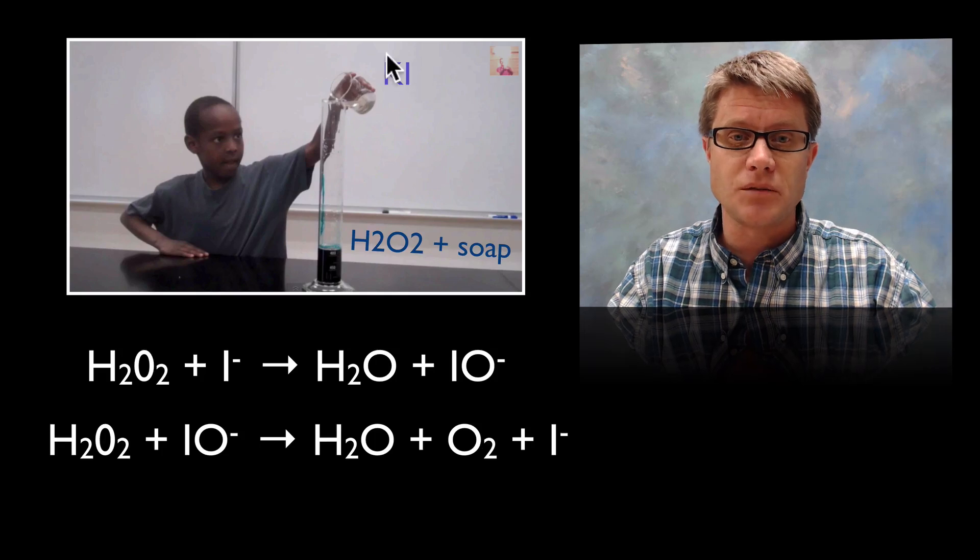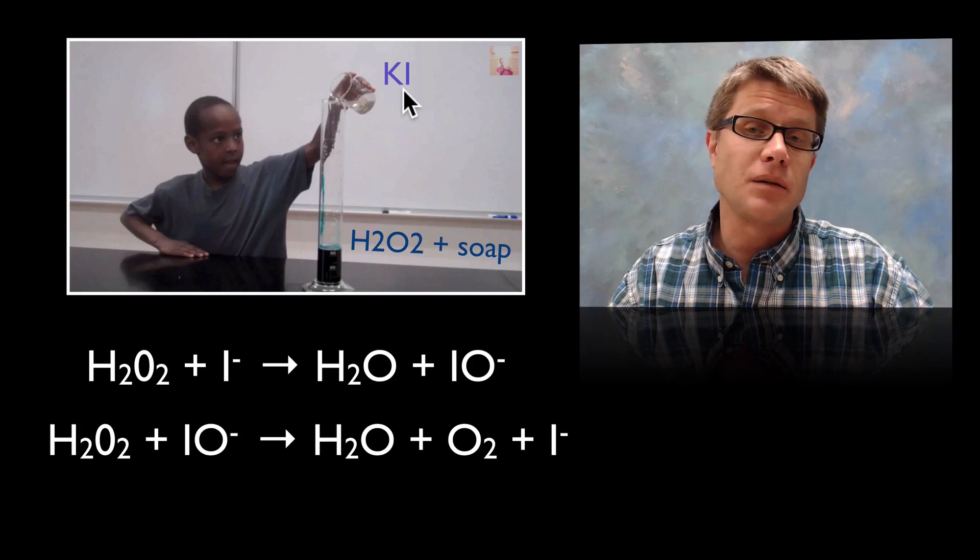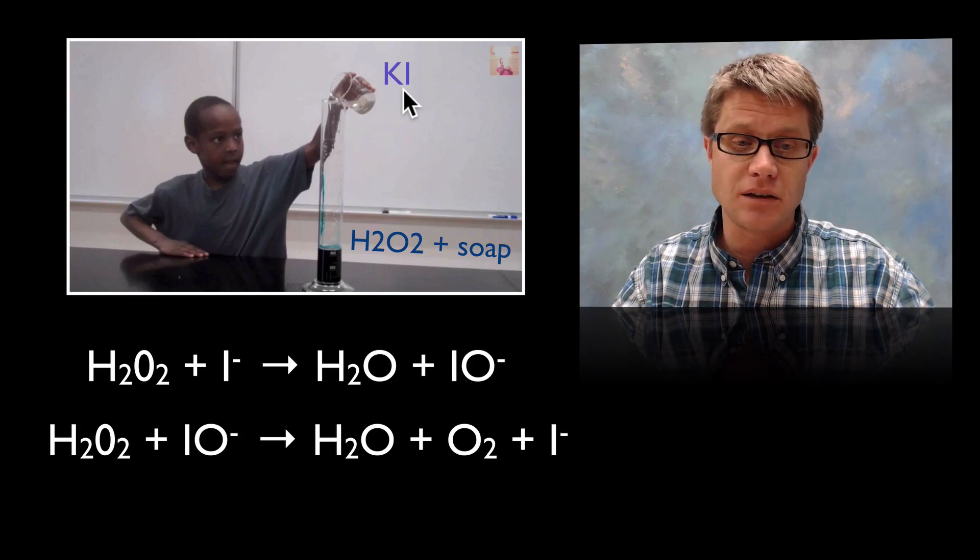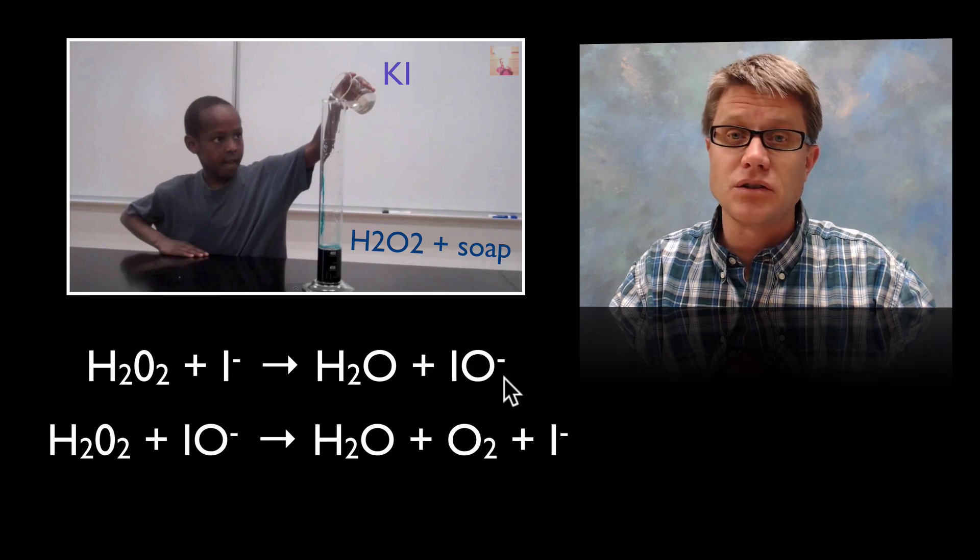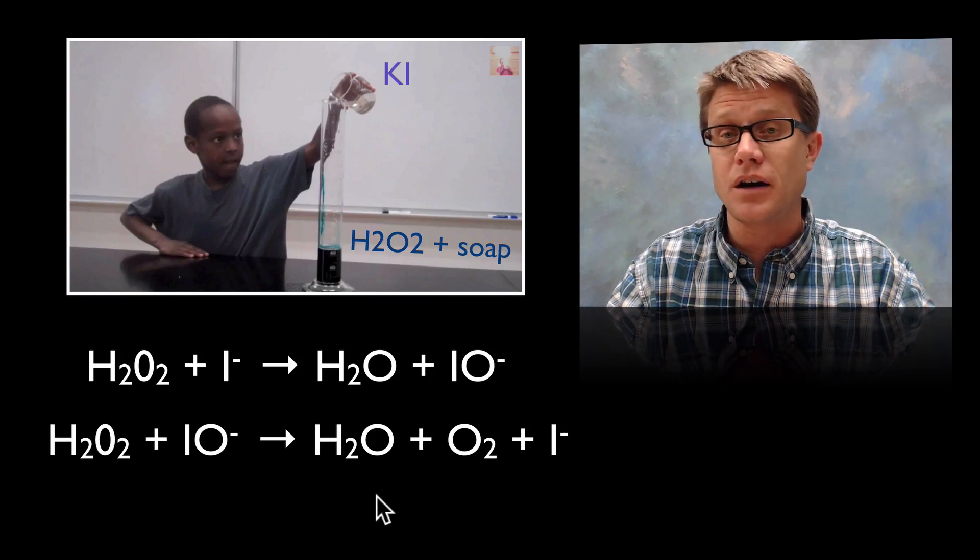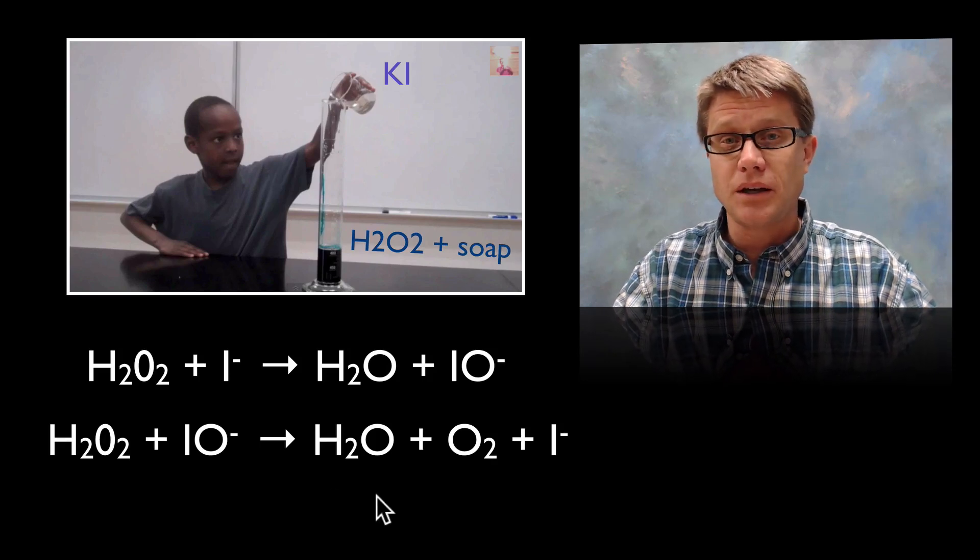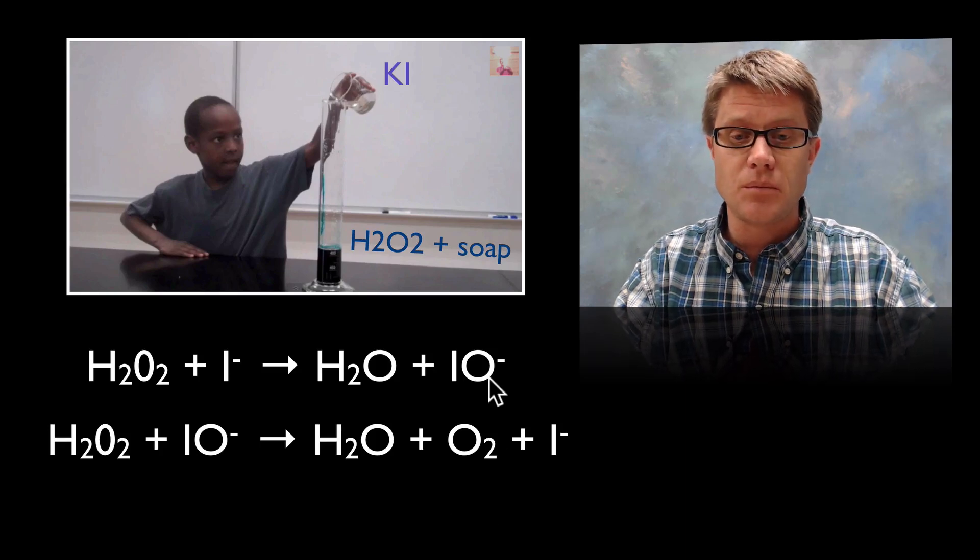And so in this elephant toothpaste experiment you're taking concentrated hydrogen peroxide and soap, and then we're adding potassium iodide to that. And that's simply going to act as the catalyst. Now what's it doing? That iodine is going to grab one of the oxygens. So it's going to make this intermediate which will then bond with the other hydrogen peroxide. And that's going to create water and oxygen. And so we're really breaking a one step reaction into two steps. And then we've got a new intermediate here.